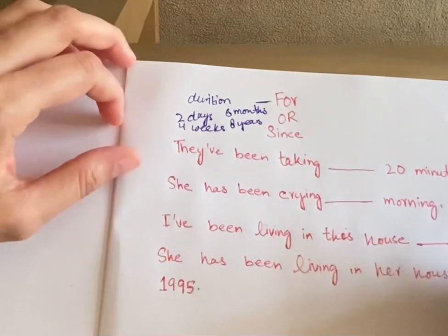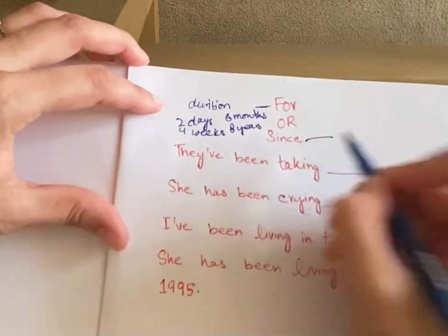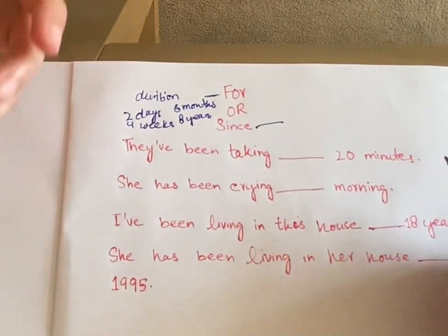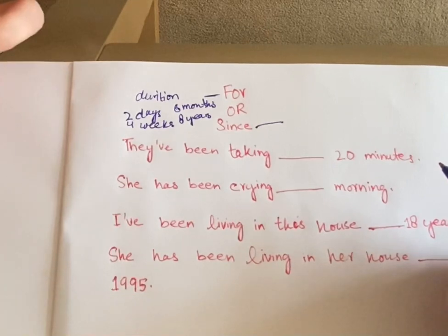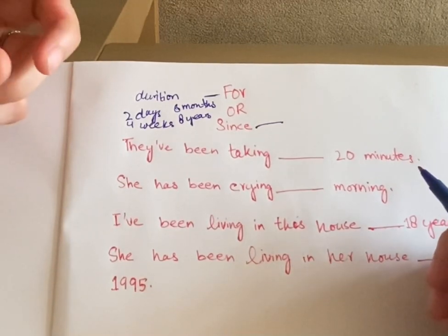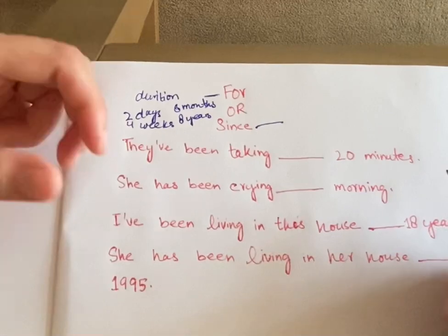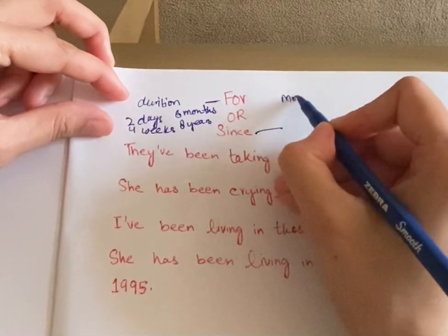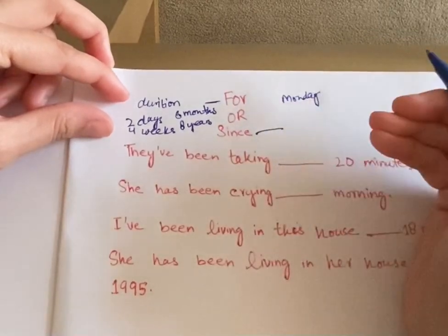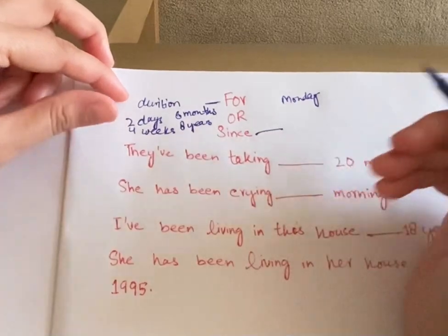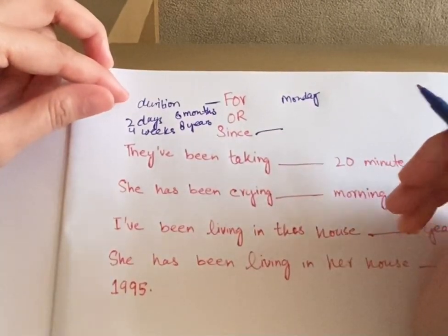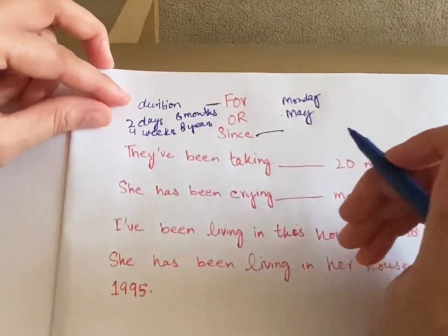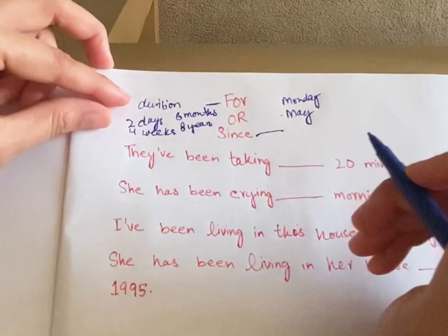For 'since,' we use it as a starting point of time — we are specifying or referring to when something actually started. So if we are talking about a day, we have to specify which day, like Monday. If talking about a month, we specify the name of the month, like May. For years, we can't just say 'six years' or 'eight years.'